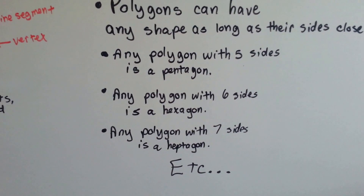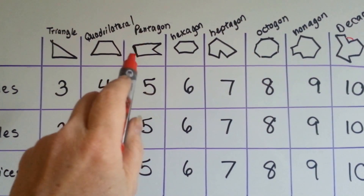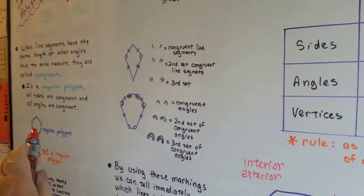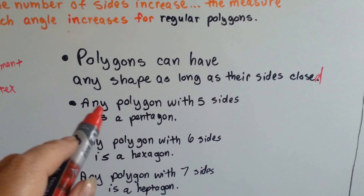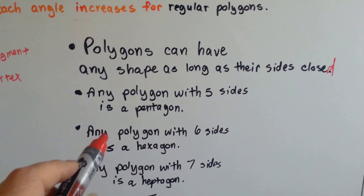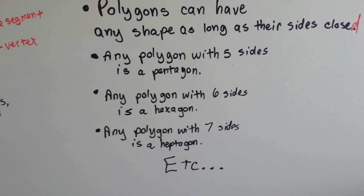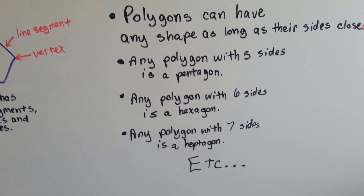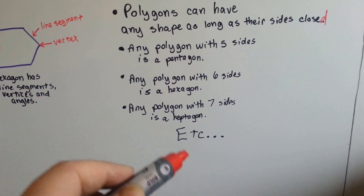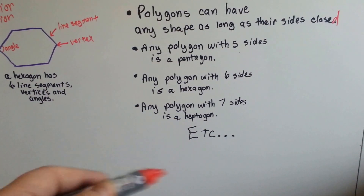Any polygon with five sides is a pentagon. This weird shape is a pentagon because it's got five sides — one, two, three, four, five. It doesn't have to be a regular shape; as long as it's got five sides and it's closed, it's a pentagon. Any polygon with six sides is a hexagon — it could be any weird shape as long as it's closed. Any polygon with seven sides is a heptagon. You could go up to 20 sides, and as long as all of its sides are closed, if it's got 20 sides, it's a polygon.